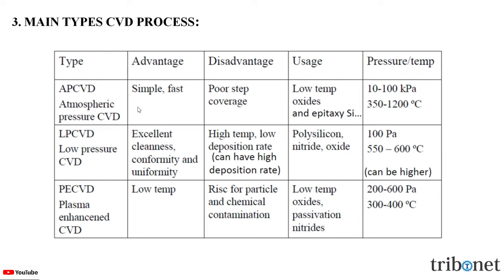The advantage of atmospheric pressure CVD is that it is simple and fast. The disadvantage is poor step coverage. Its usage includes low temperature oxides and epitaxy of silicon. The operating pressure and temperature is 10 to 100 kPa and 350 to 1200 degrees Celsius.